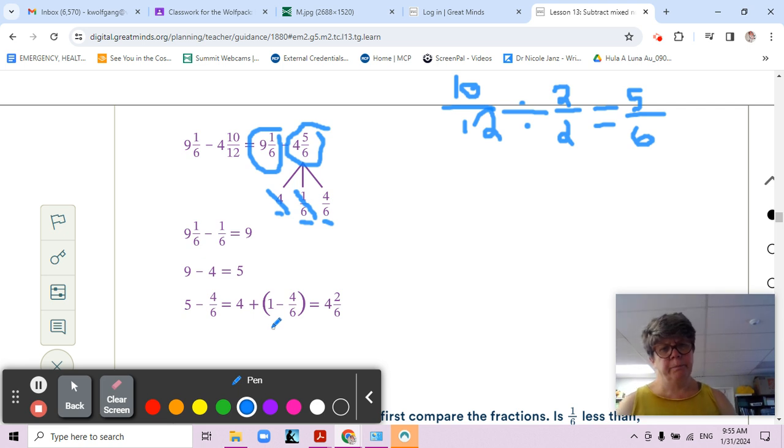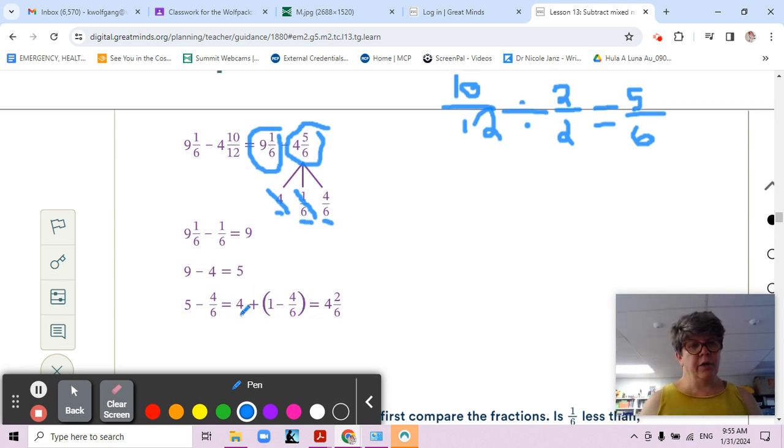And now I can do five minus four sixths. Look at what they did here: four plus one minus four sixths. All they did was separate the four and the one, which is equal to five, because one is the same as six sixths.